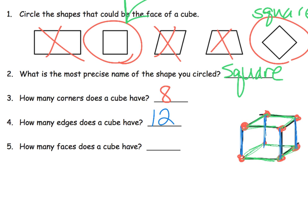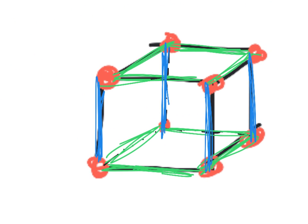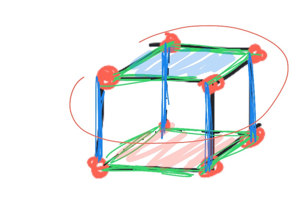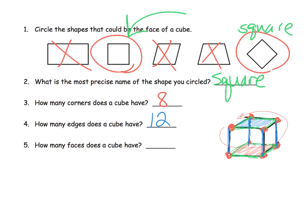And how many faces does that cube have? Well, we talked about that. It has a top, a bottom, and then four going around the side. So we could say it's got a top, and then it's got a bottom, and then it's got four going around the side. And that wraps up that slide. How many faces? So I forgot to answer — six.